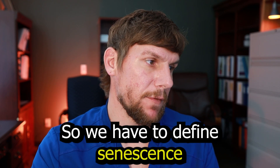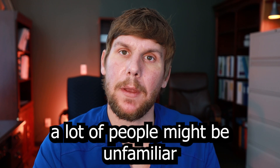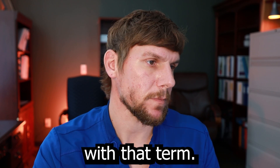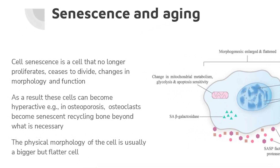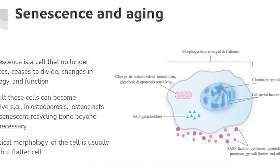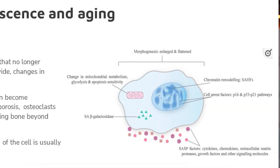We have to define senescence a little bit, because a lot of people might be unfamiliar with that term. Cell senescence is a cell that no longer proliferates — it ceases to divide, changing its morphology and function. In that picture, you can see the morphology enlarge and flatten. Cells with dysfunctional mTOR signaling leading to senescence will often become hyperactive.